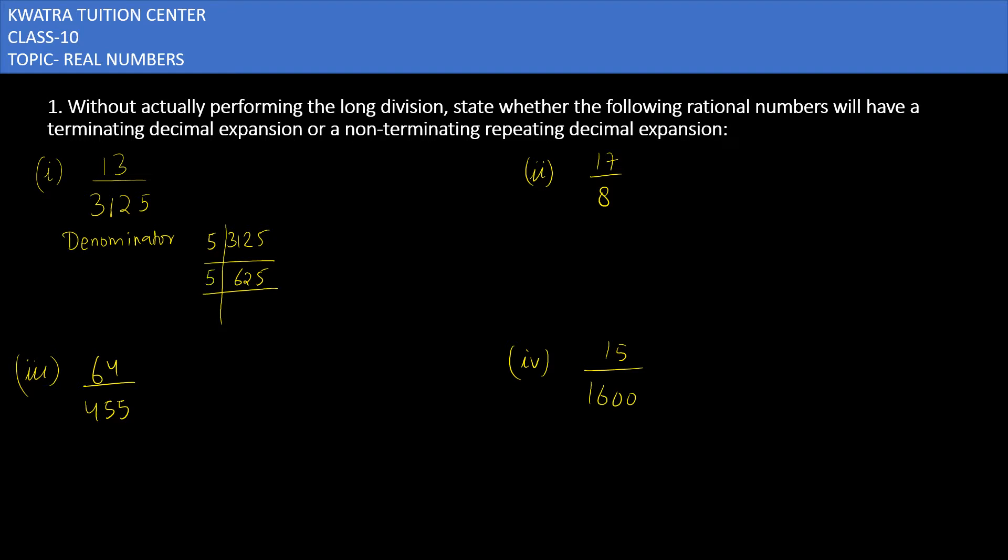Then 5 is divisible with 5. Let's check the divisibility with 5. It will give you 125, then 25, and then how will 25 come? 5 and 5. This means that 3125 can be written as 5 raised to the power 5. 13 over 5 raised to the power 5. That means this is a terminating one. Why? Because if the factor is in the form of 2 or 5, then it will give you a terminating expansion. So the first one is terminating.